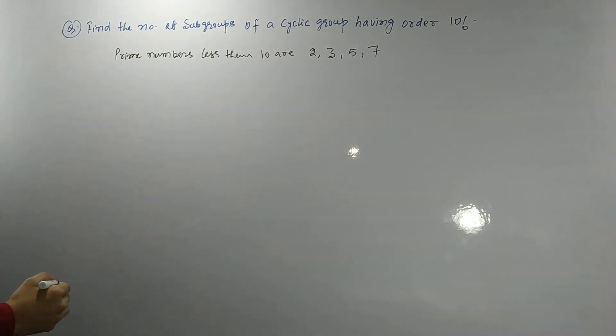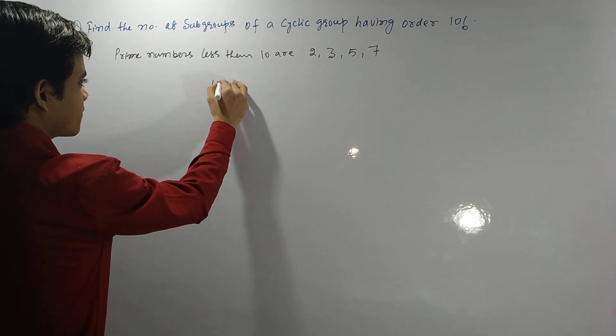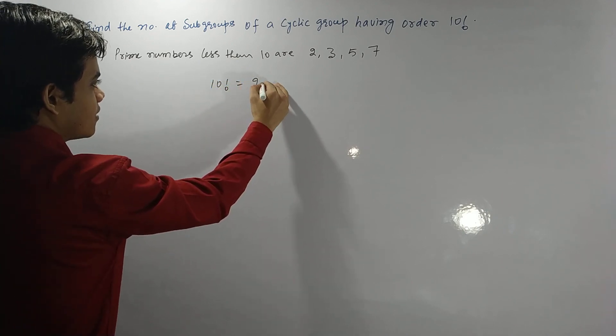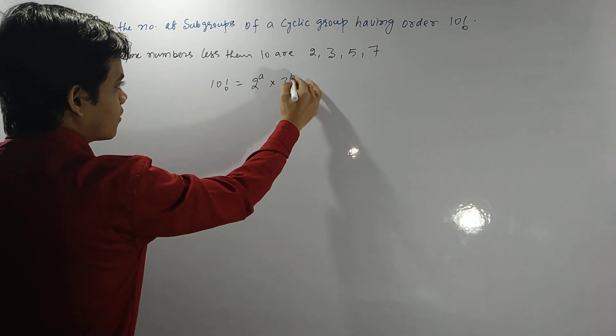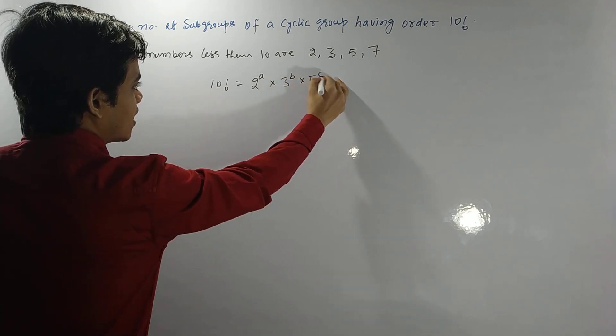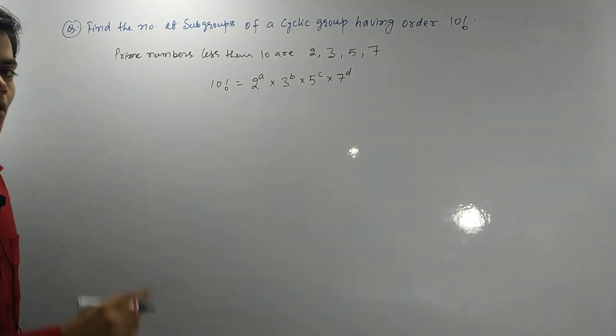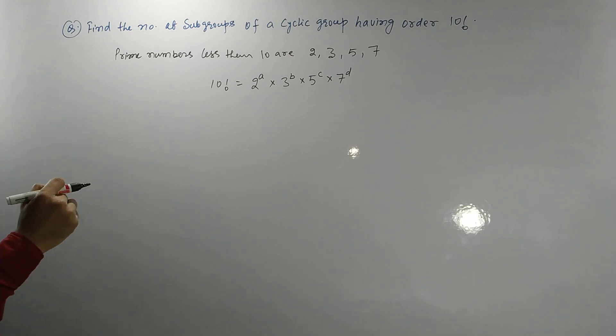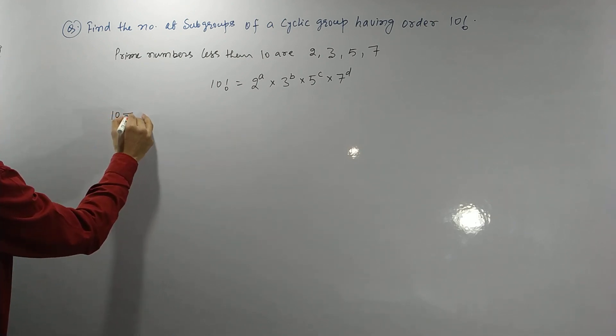So we need to write this 10 factorial as some power of 2 into some power of 3 into some power of 5 into some power of 7. What is the way to write this? Please watch carefully here at this moment. First of all, divide 10 by 2. What will you get? 5.